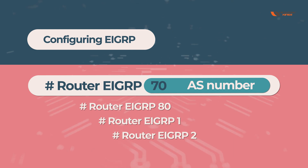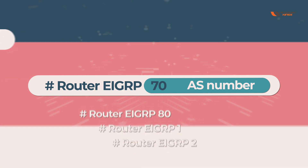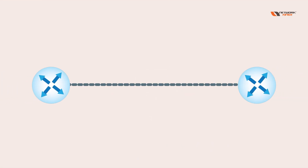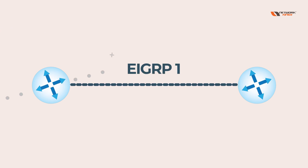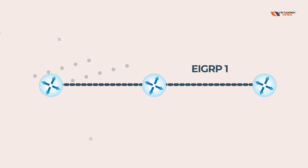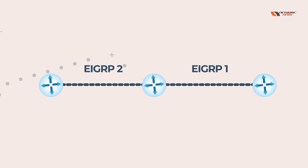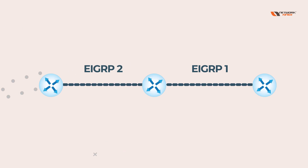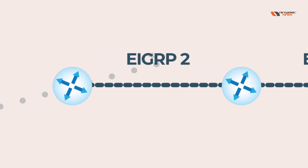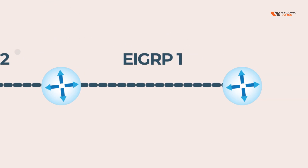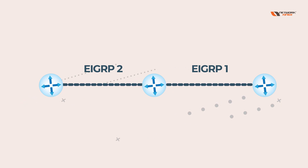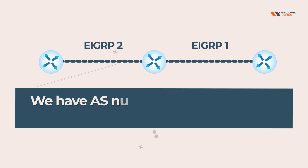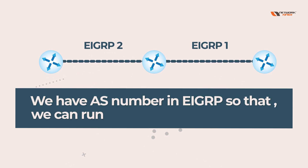The reason we have an AS number in EIGRP is so that we can run multiple EIGRP processes. For example, between two routers you can run EIGRP 1, and between two other routers you can run EIGRP 2. So one router can run EIGRP 2 on its left side and EIGRP 1 on its right side. That is the key reason for having an AS number in EIGRP.